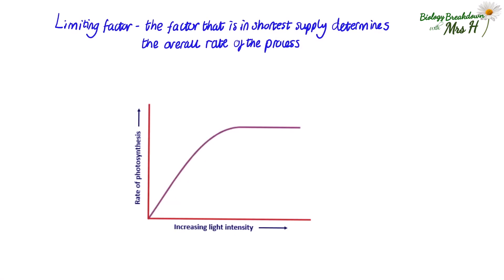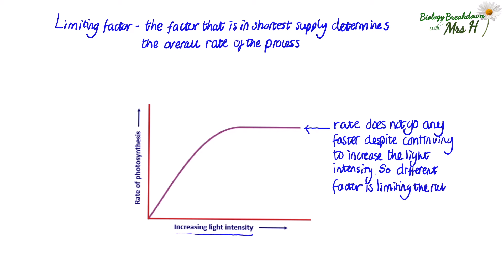When we look at this graph, we can see that as we increase light intensity, the rate of photosynthesis also increases until a certain point at which the rate is going as fast as it can. No matter how much you increase the light intensity, the rate does not get any faster after this point. The rate is being limited by a different factor. It could be that there's not enough carbon dioxide available or that the temperature needs to be increased.